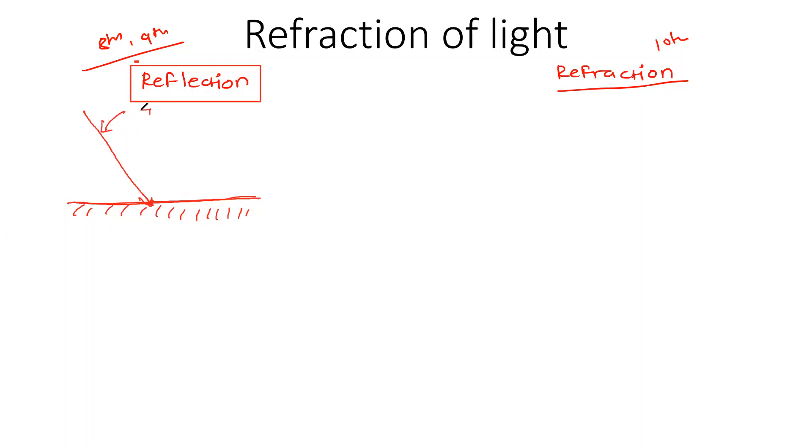So this ray is called as incident ray. And this perpendicular line is called as normal. So after the incident, it will turn back. So this is called as reflection.